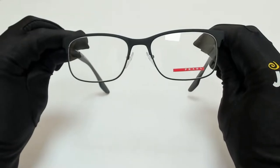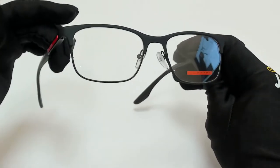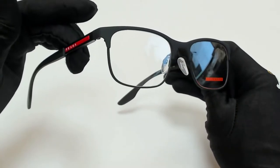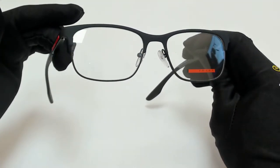I'll be demonstrating Prada Linea Rossa eyeglasses, model VPS 52N, color code DG0101.